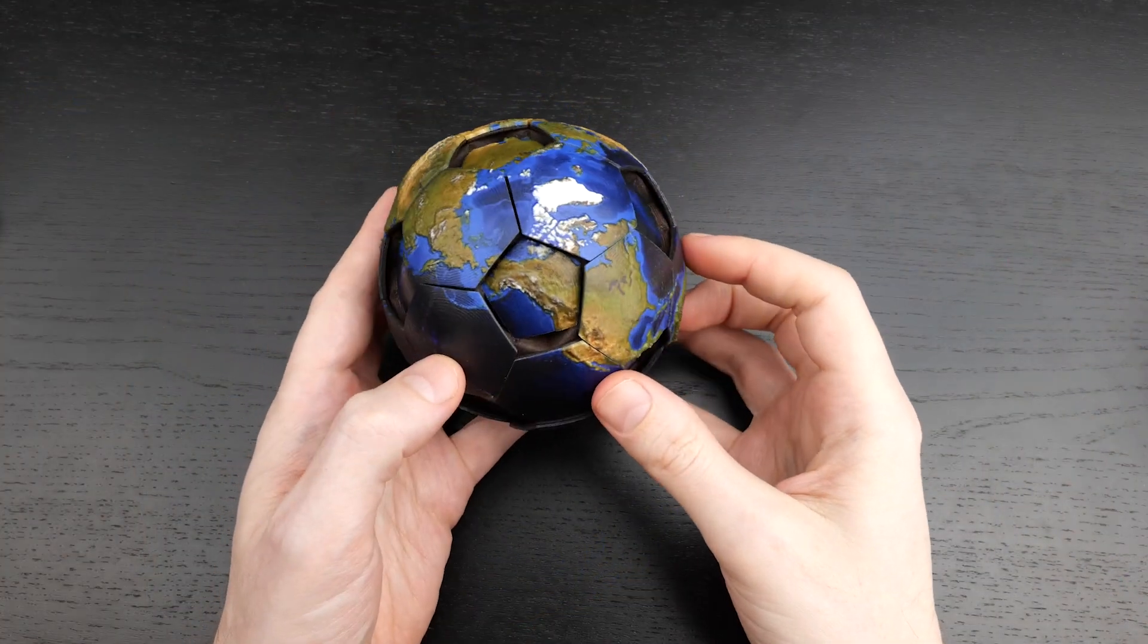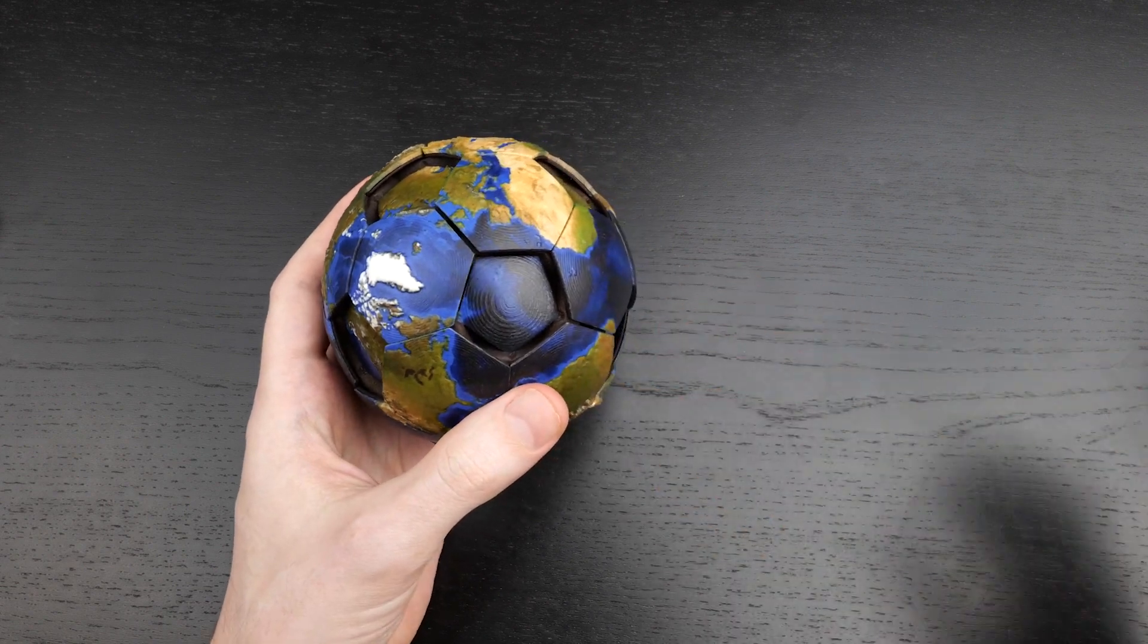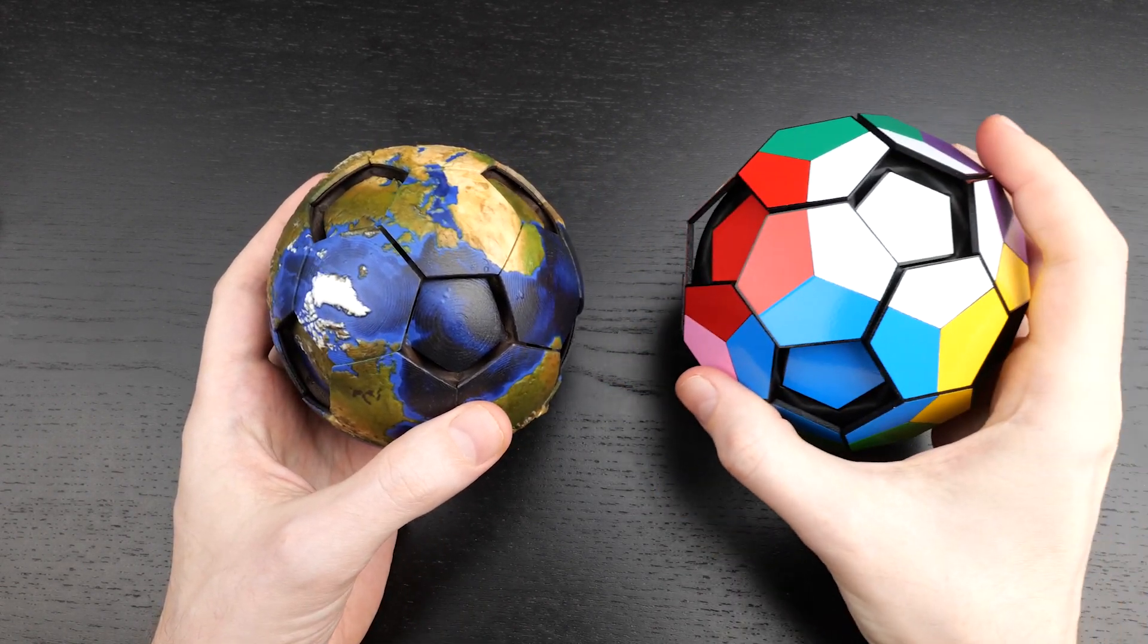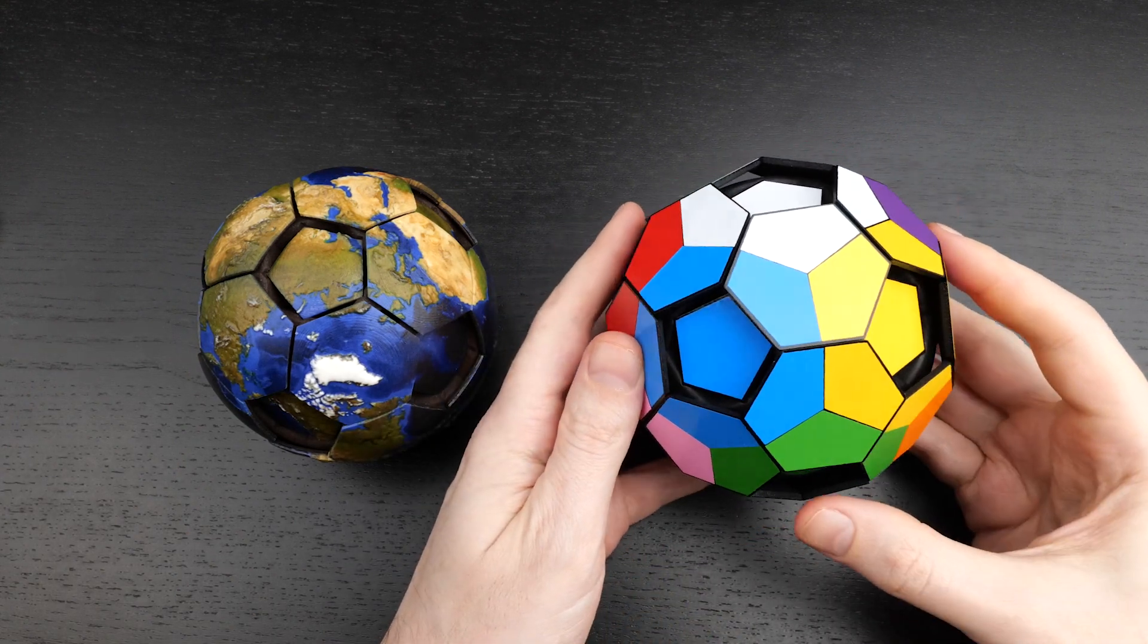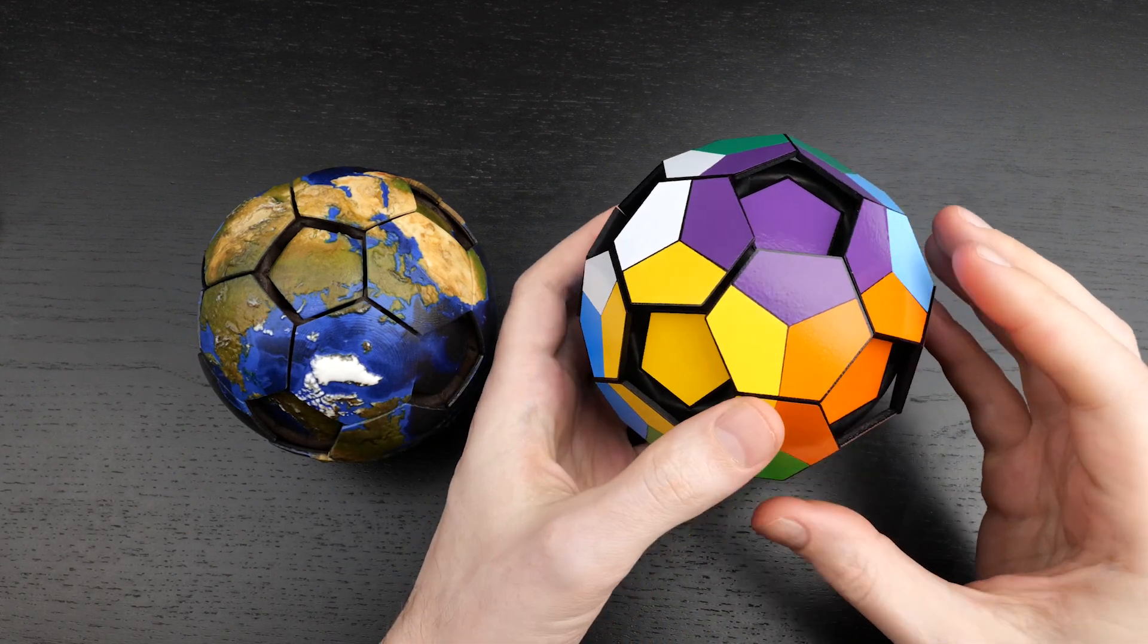This puzzle is considerably harder than the 15 puzzle. To better illustrate why, let's look at this alternative flat version, which replaces the contents of the globe with Rubik's Cube style colored stickers.